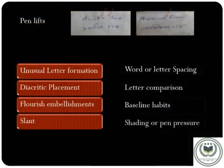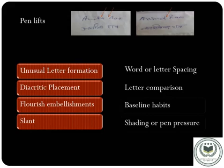The next is pen lifts, also called separations. It is the way a person writes — do they stop before writing a new letter or do they connect the letters? People usually use the same pen lifts, so a forgery may stand out if all the letters are separated when the real signature connects them. In these two samples, the arrow indicates the pen lifting by the writer.